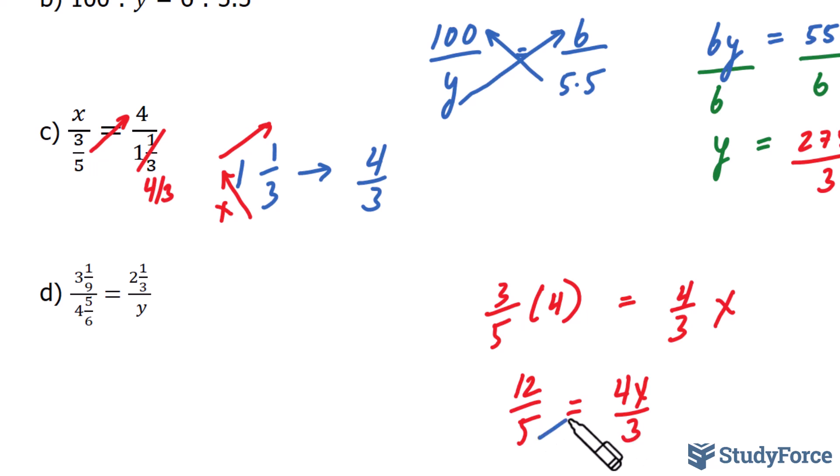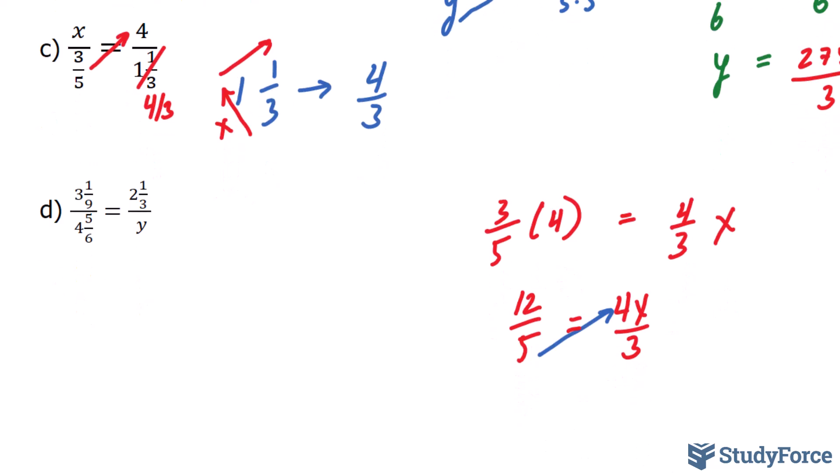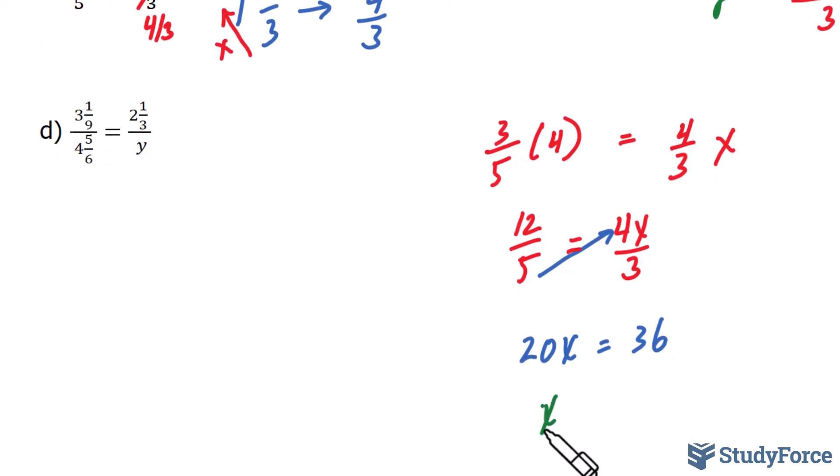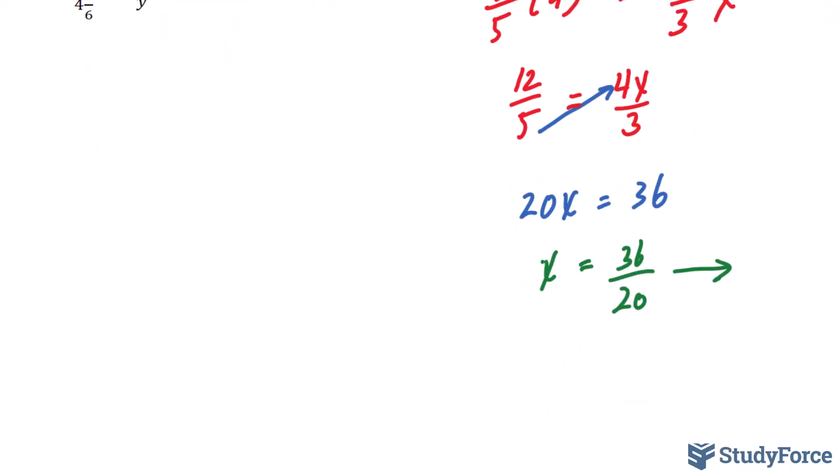So we cross-multiply. Again, 5 times 4x makes 20x. And 3 times 12 makes 36. Dividing both sides by 20 and reducing this fraction down to lowest terms gives us 9 over 5. And that's your answer.